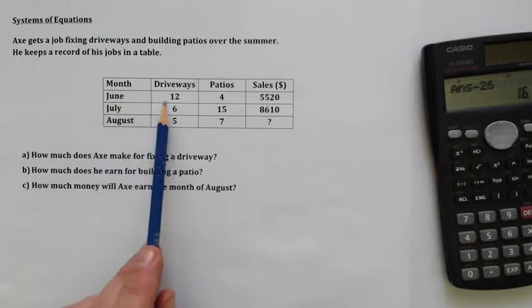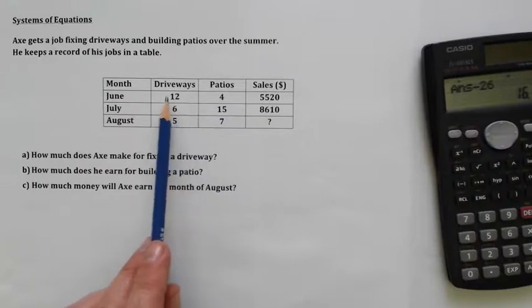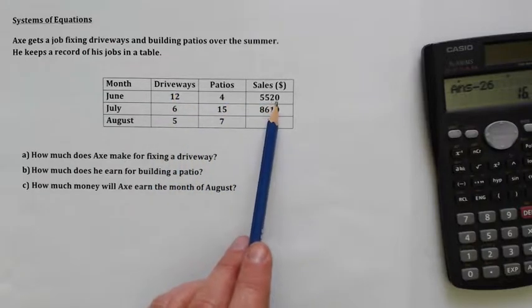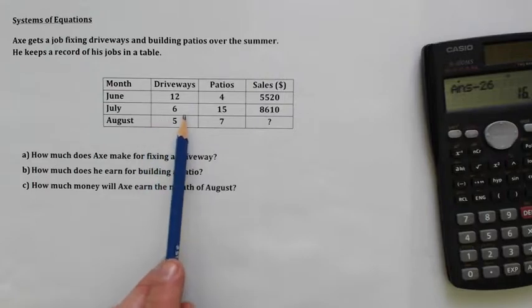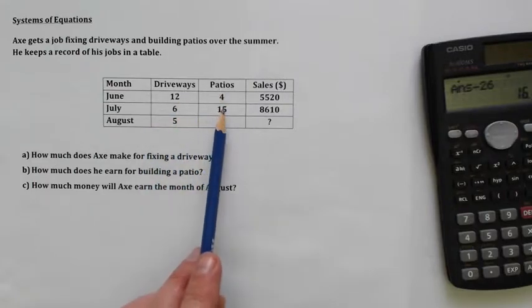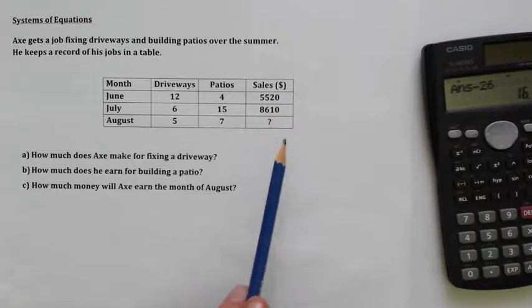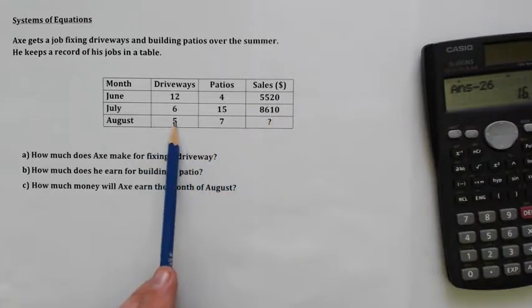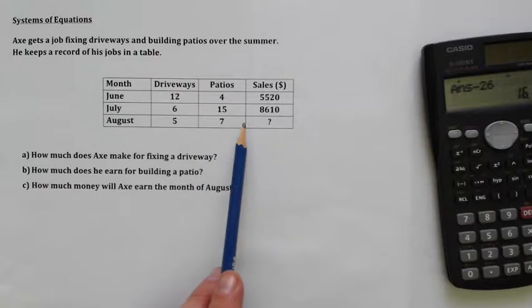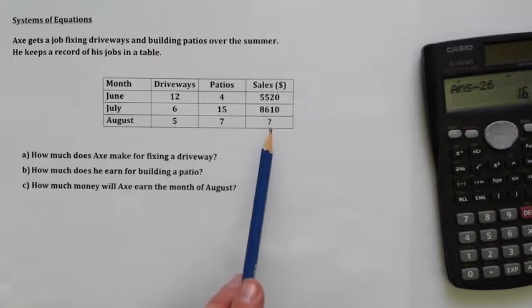So in June, he does 12 driveways with 4 patios and he makes $5,520. And in July, he does 6 driveways and 15 patios and he makes $8,610. And in August, he's going to do five driveways and seven patios and we want to know how much money he's going to make.